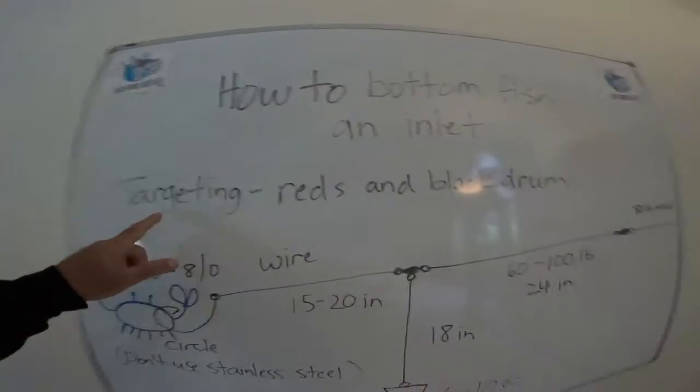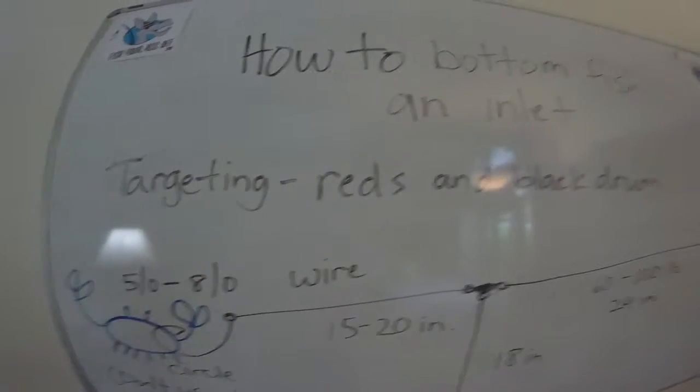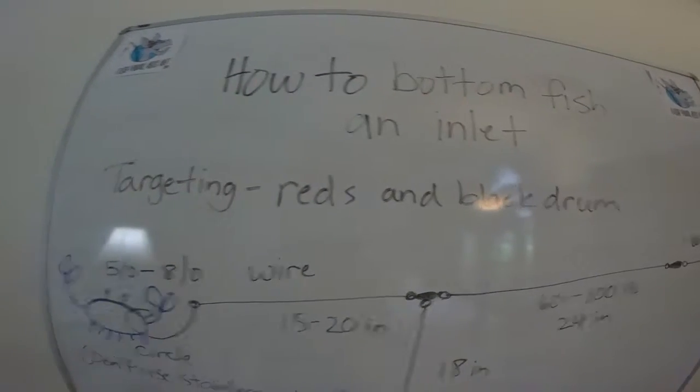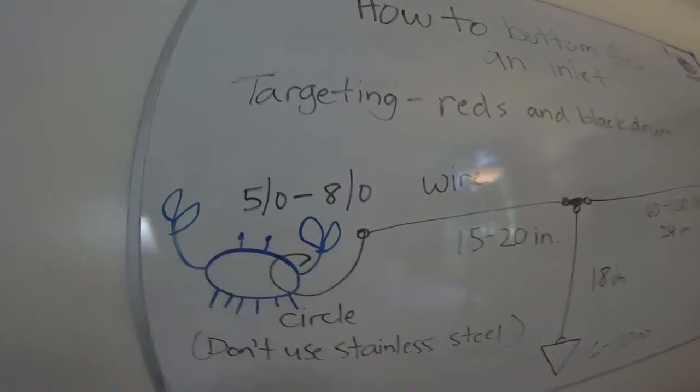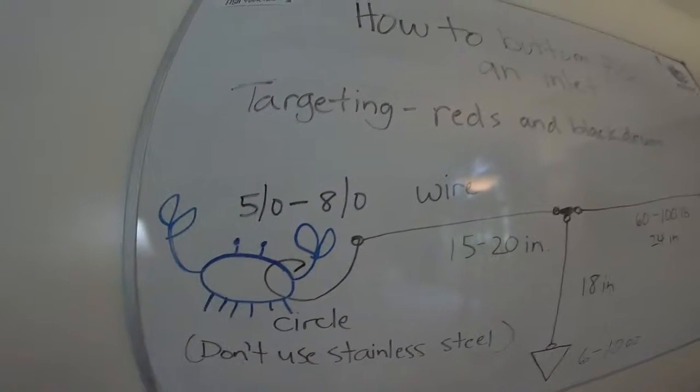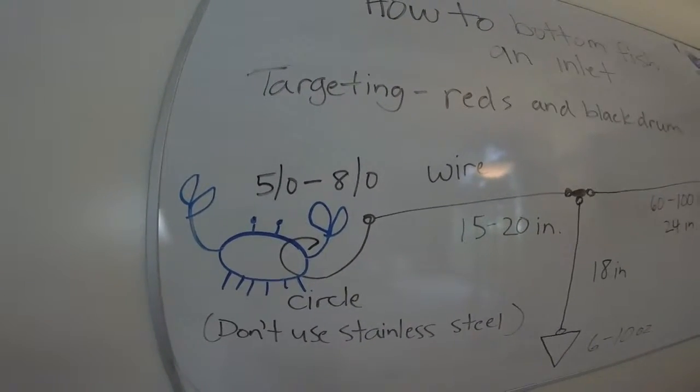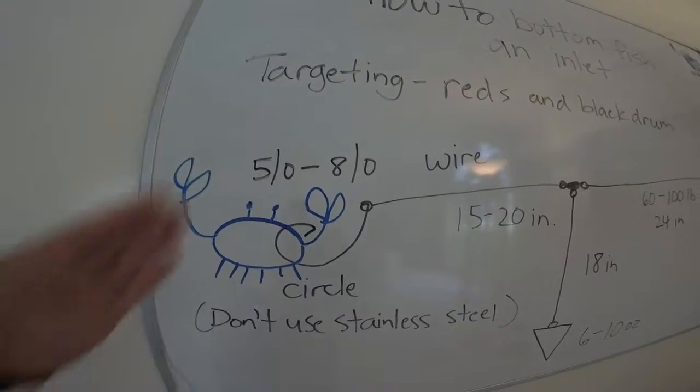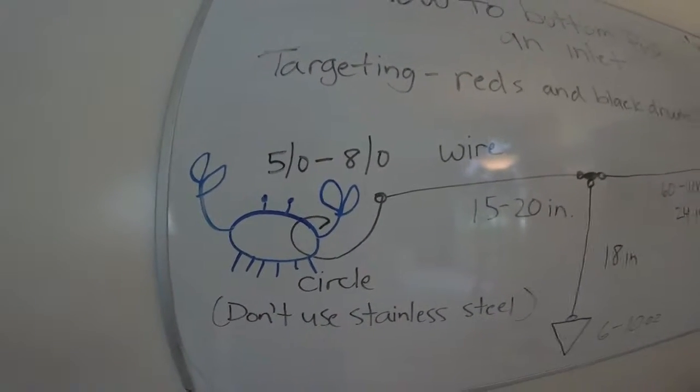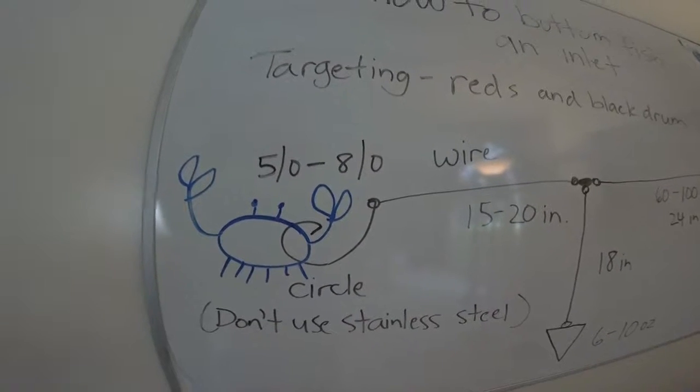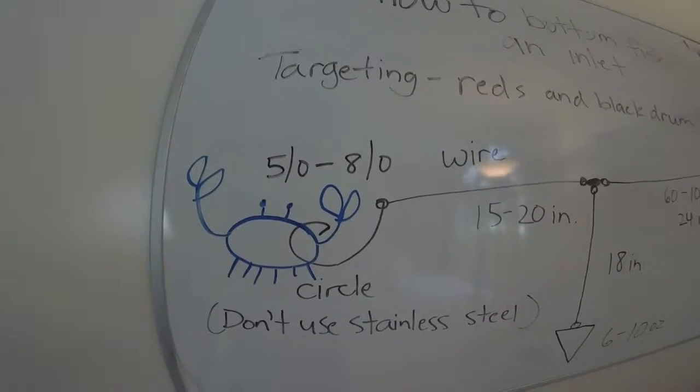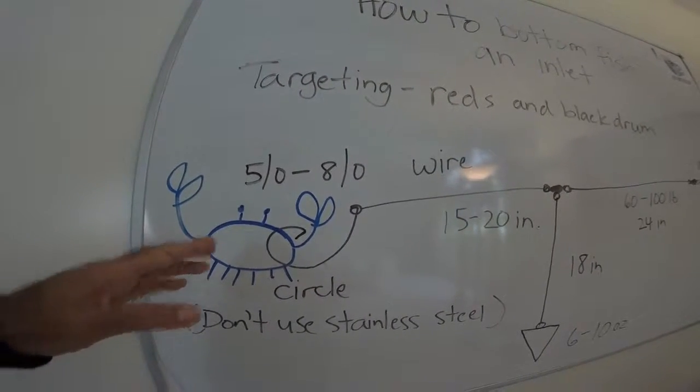So if you're bottom fishing an inlet, and again, let's just say you're targeting reds and black drum. First of all, your bait—that's a whole crab, but typically what you want to do is cut a crab in half so it's real stinky, putting a lot of stink in the water, a lot of scent molecules.